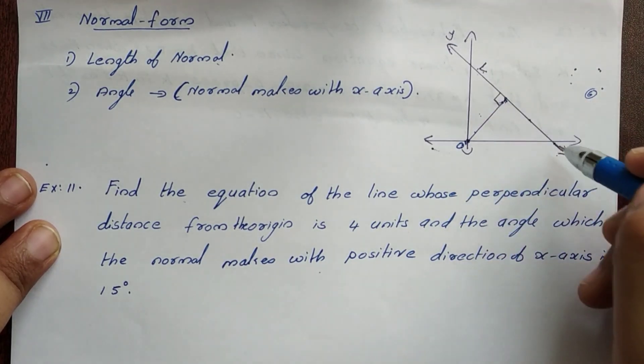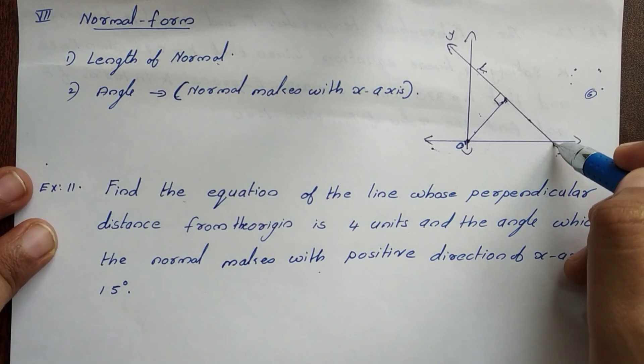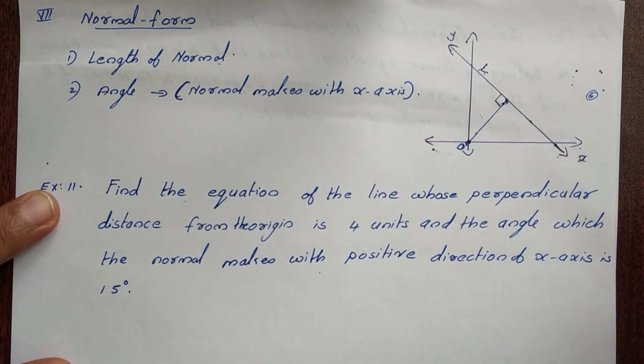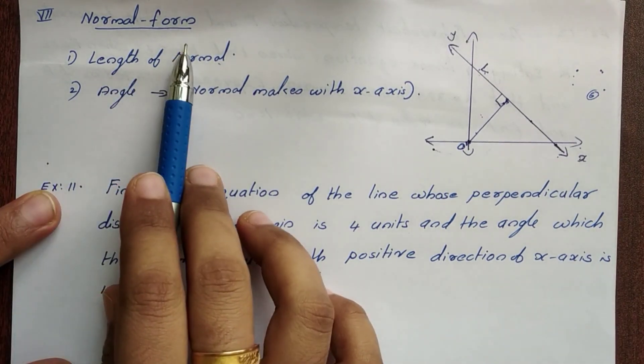Then, two points straight line equation. Then, intercept form. In this video, we will learn another type. That is, normal form.